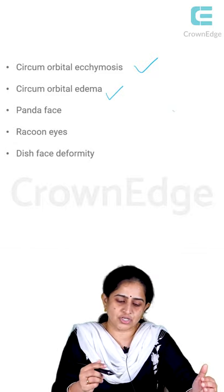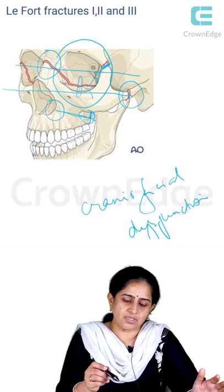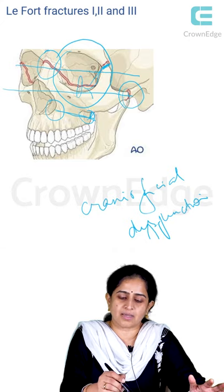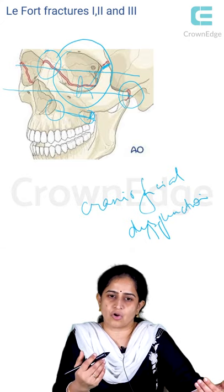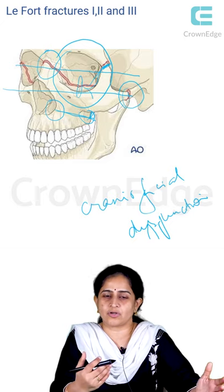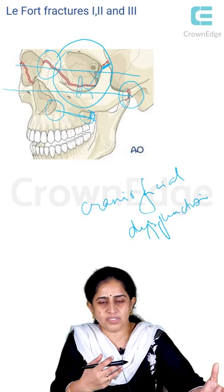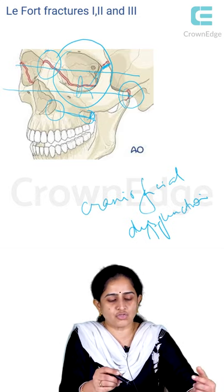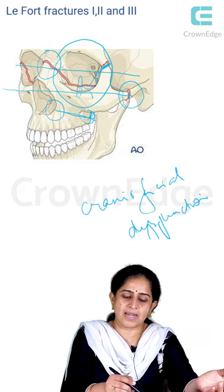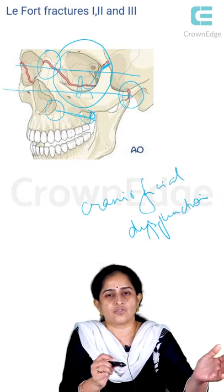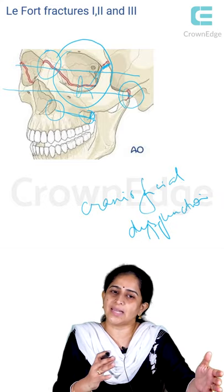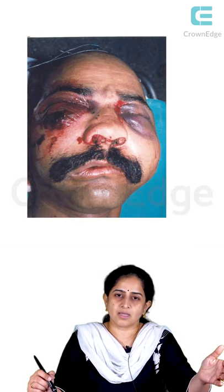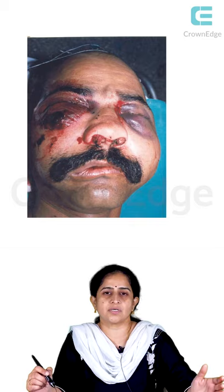Why does this discoloration take place? The fracture lines go through the eye, and with the collection of blood from trauma, there is a breach in the periosteum, causing blood to come out into that region. Because of tissue laxity — the tissues around the eye are very lax and loose — a large amount of fluid can accumulate. All the edematous fluid as well as the blood accumulates around that area and appears as circumorbital ecchymosis or circumorbital edema.